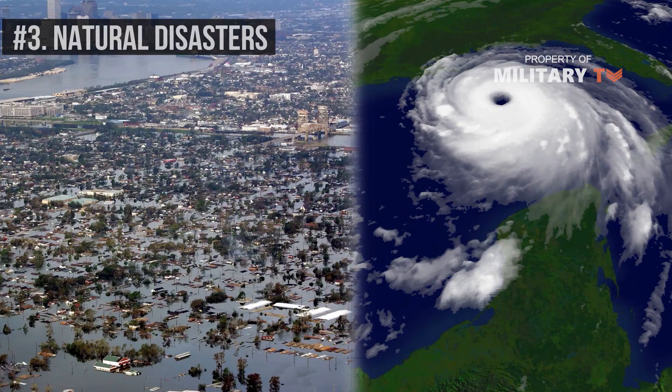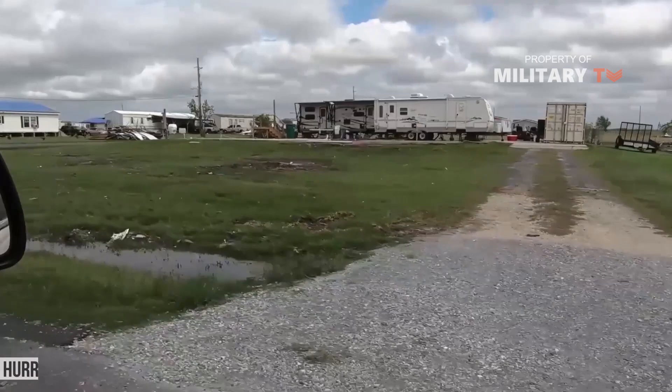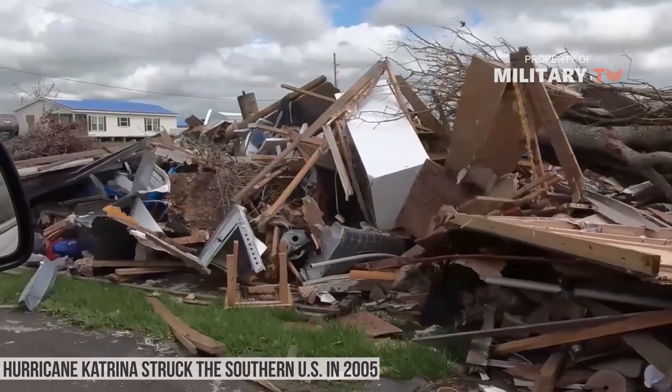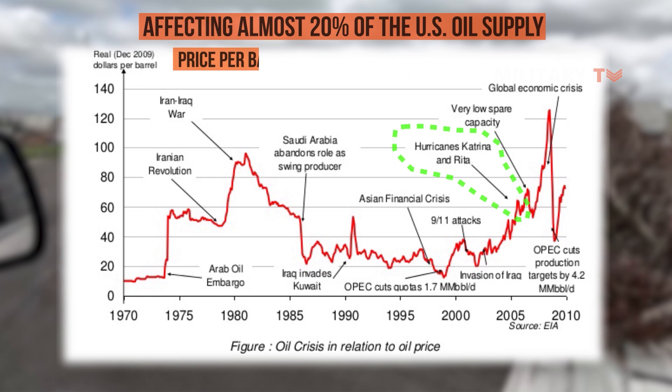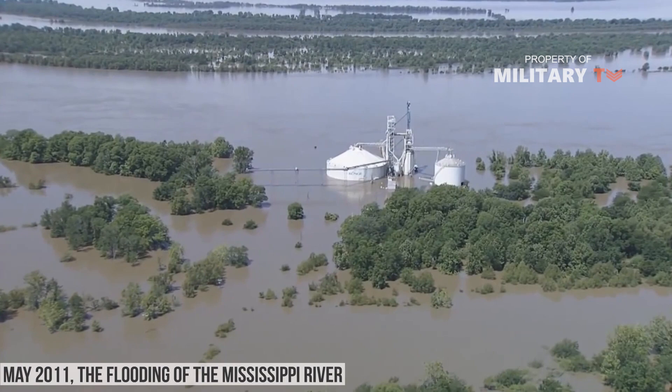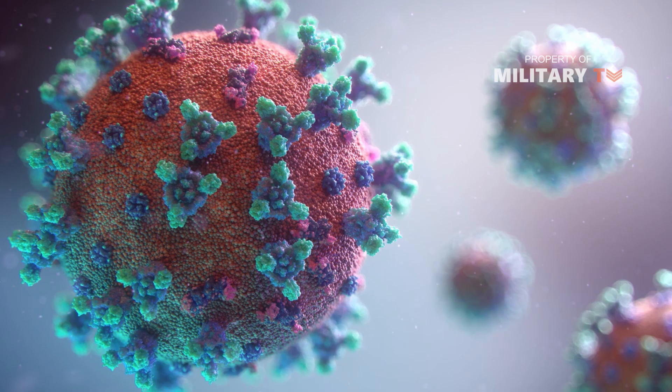Number 3: Natural disasters. Natural disasters are another factor that can cause oil prices to fluctuate. For example, when Hurricane Katrina struck the southern U.S. in 2005, affecting almost 20% of the U.S. oil supply, it caused the price per barrel of oil to rise by $13. In May 2011, the flooding of the Mississippi River also led to oil price fluctuation.